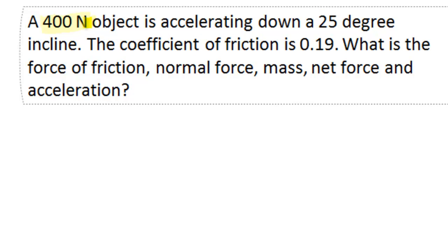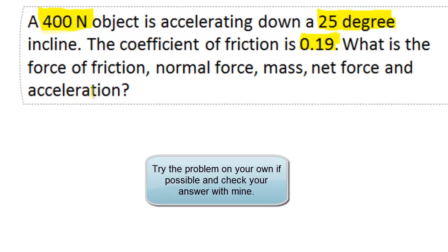The problem reads as this: we have a 400 Newton object that is accelerating down a 25 degree incline. The coefficient of friction is 0.19. We're asked to solve for the force of friction, the normal force, the mass, the net force, and the acceleration. This is a big problem — we're given three key pieces of information. The object is accelerating, so we know there's a net force greater than zero.